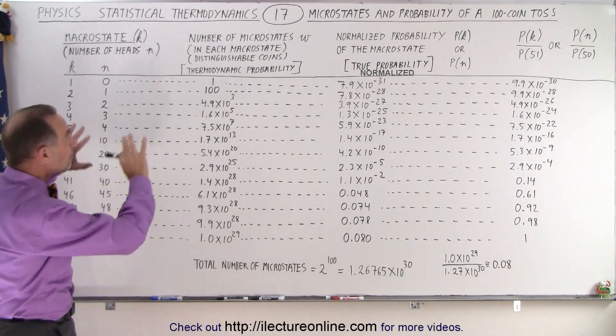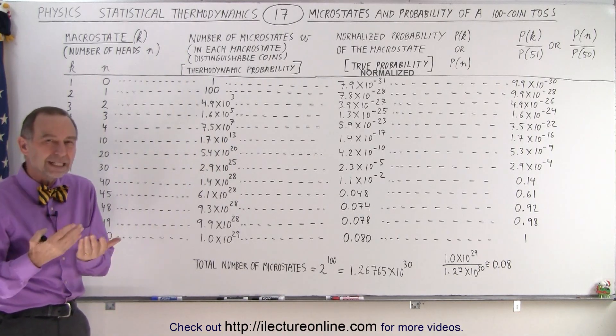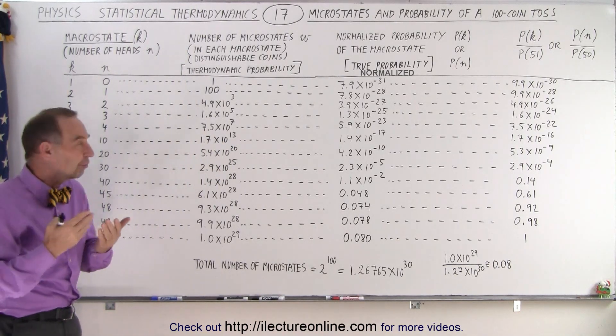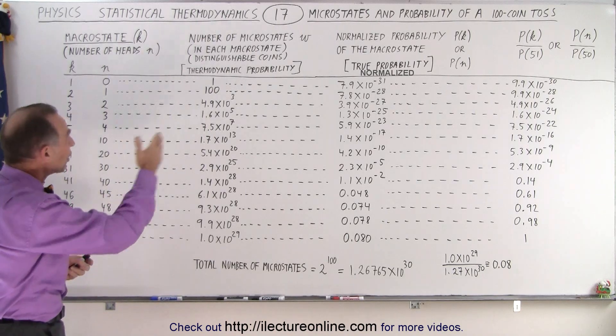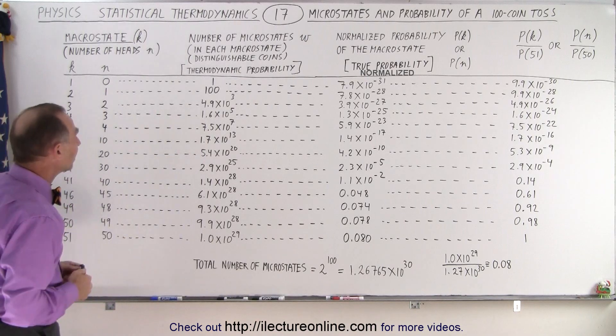Also, the reason why we put this chart up here is to get a feeling of the nomenclature, the letters, the values that we use when we try to explain the macrostates and the probabilities.